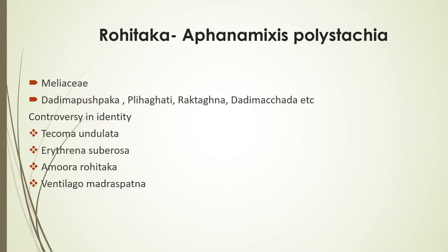Rohidaga — the botanical name is Phanomyxus polystachia. It belongs to the family Meliaceae. The synonyms are Dardimapushpaga, Pleehagadi, Rettagna, Dardimachrada, etc. There is a big controversy in the identity of Rohidaga.